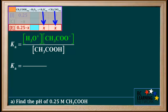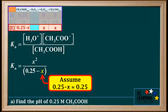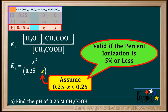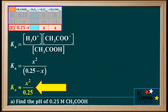The equilibrium concentrations of hydronium and ethanoate are both equal to x, so their product in the Ka expression is x squared. The concentration of ethanoic acid at equilibrium is 0.25 minus x. The degree of ionization for ethanoic acid is very low, so we make the assumption that x is insignificant compared to 0.25 — that is, 0.25 minus x is approximately equal to 0.25. This assumption is valid if the percent ionization is 5% or less, and it helps us avoid a quadratic equation. You must always state this assumption when you use it. So Ka is approximately equal to x squared over 0.25.